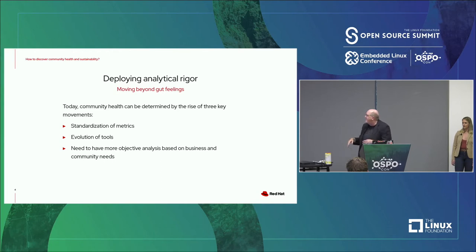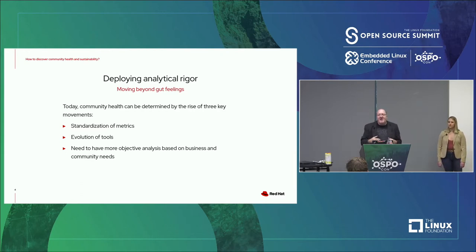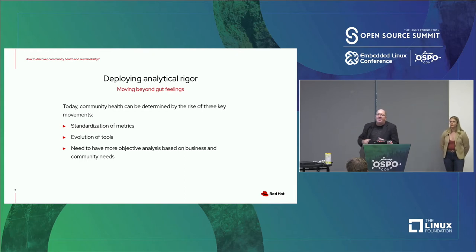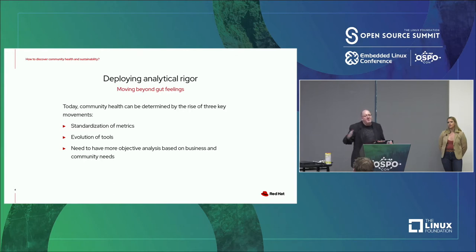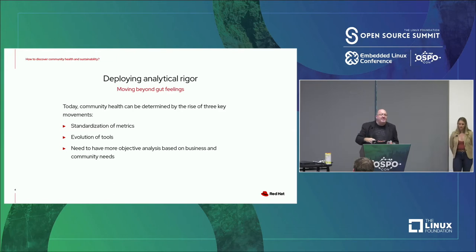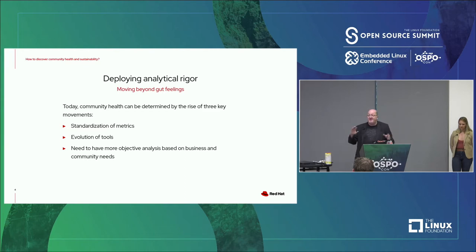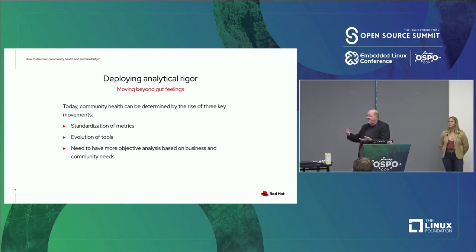The thing that really spurred the concerted effort we are doing right now in the Community Insights team is this need to have more objective analysis based on both business and community needs. Before, it was just community. But now at Red Hat and other companies, we are seeing a real need to figure out where communities fit on our bottom line. That's not to say we're trying to cut costs, but we are trying to figure out how to make them more efficient.